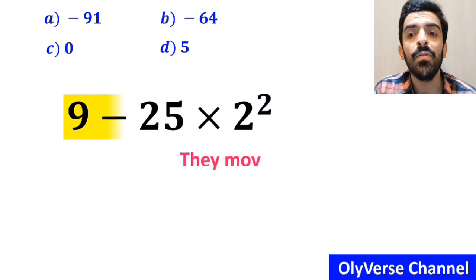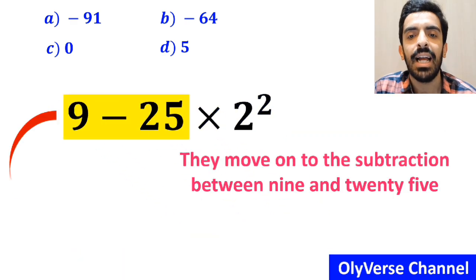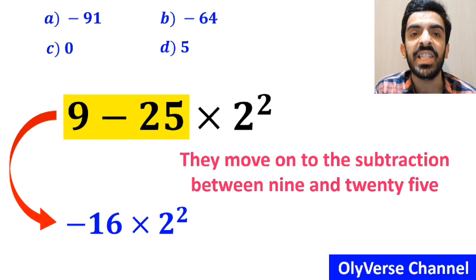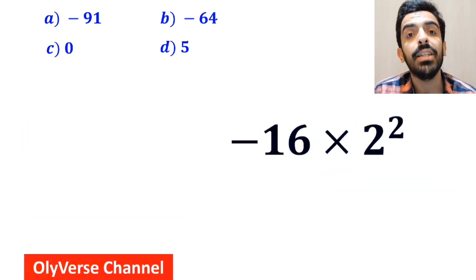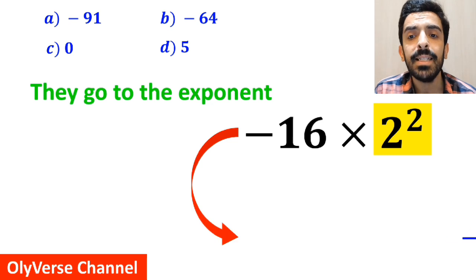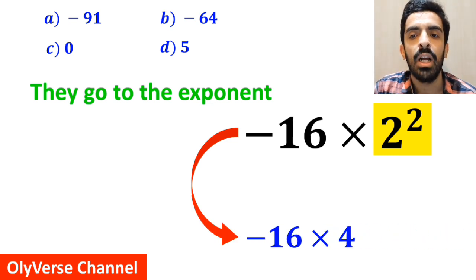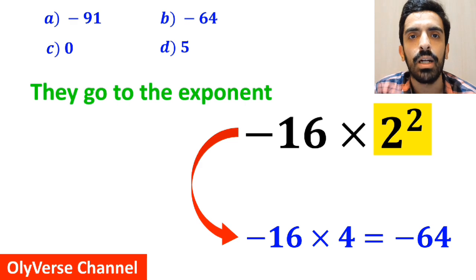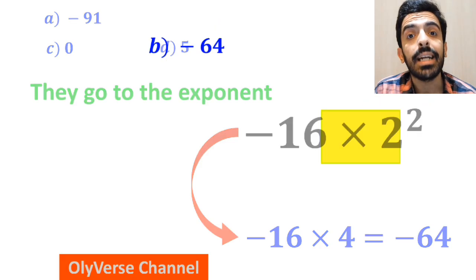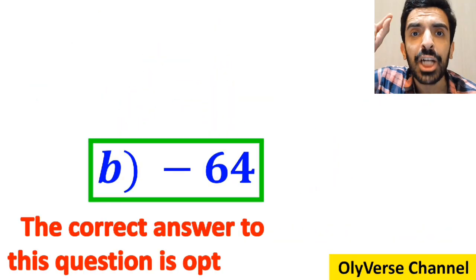Then they move on to the subtraction between 9 and 25, and they rewrite this expression as negative 16 multiplied by 2 squared. In the final step, they go to the exponent and replace this expression with negative 16 multiplied by 4, which finally gives them the answer negative 64. And they conclude that the correct answer to this question is option B.